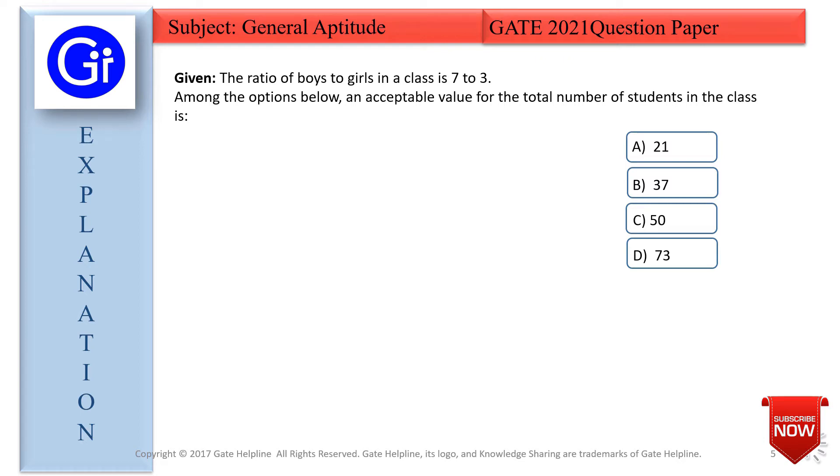We need to tell the total number of students in the class. Friends, we are aware of the options: 21, 37, 50, and 73. First, we'll try the hit and trial method with the options.